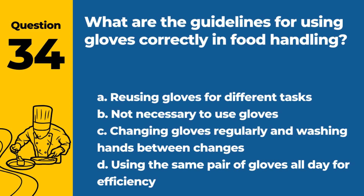Question 34. What are the guidelines for using gloves correctly in food handling? A. Reusing gloves for different tasks. B. Not necessary to use gloves. C. Changing gloves regularly and washing hands between changes. D. Using the same pair of gloves all day for efficiency. Answer: C. Proper glove use in food handling involves regular changes and hand washing between glove changes to prevent contamination.